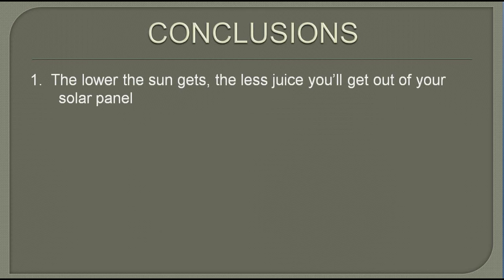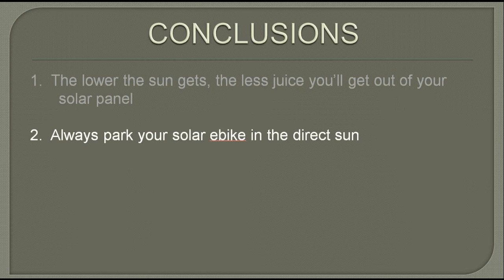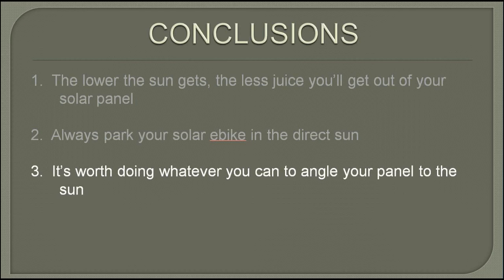What can we conclude from all this? First, the lower the sun gets, the less juice you'll get out of your solar panel. Second, always park your solar e-bike in the direct sun. Third, it's worth doing whatever you can to angle your panel to the sun.